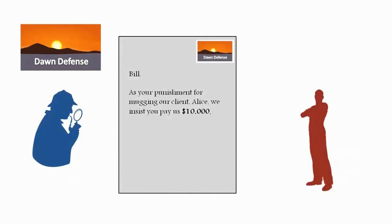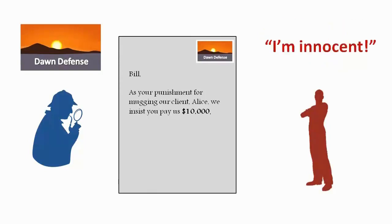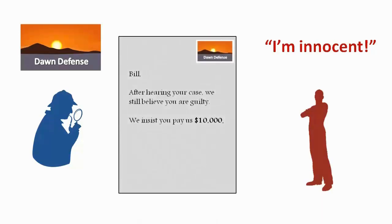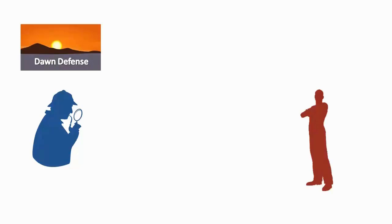Companies like Dawn Defence exist to serve demands for security, law and justice. They suffer financially when a customer is a victim of a crime, giving them a strong incentive to identify and catch the criminal, satisfy demands for justice, and recover the cost of having paid compensation to Alice. Dawn Defence employs skilled detectives, who conclude that Bill was the thief. They issue him a fine: pay up, or force will be used. Bill could admit guilt and accept his punishment, or protest his innocence. Dawn Defence takes great care not to use force against innocent people, so it will take Bill's claims of innocence seriously.